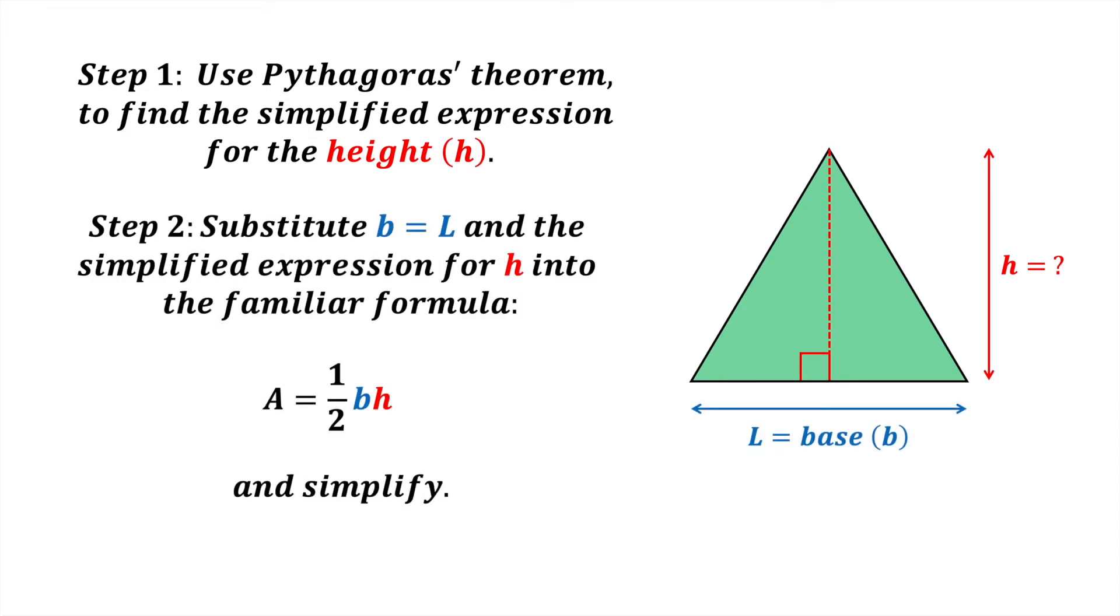Step 2: Substitute b equals L and the simplified expression for h into the familiar formula area equals half times base times height and simplify. Let's begin.